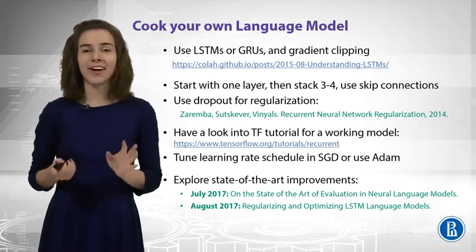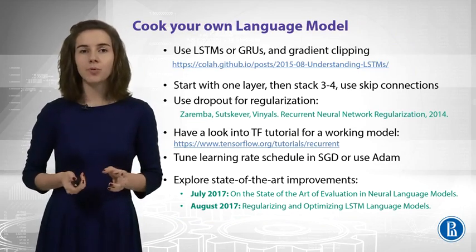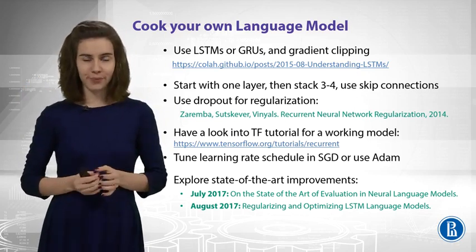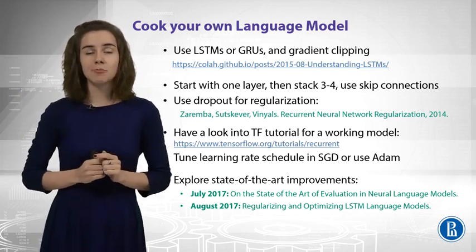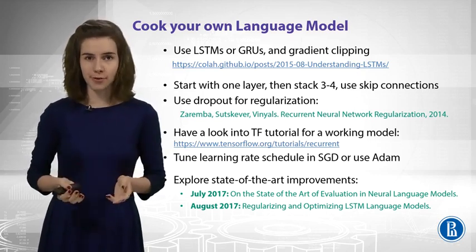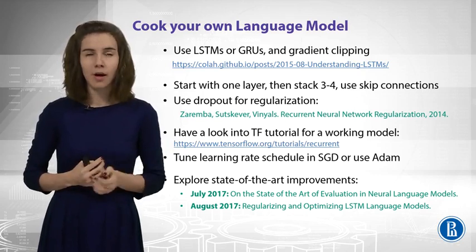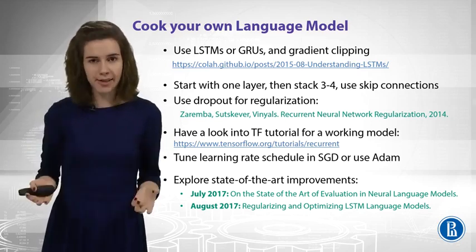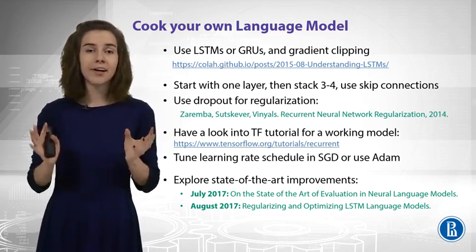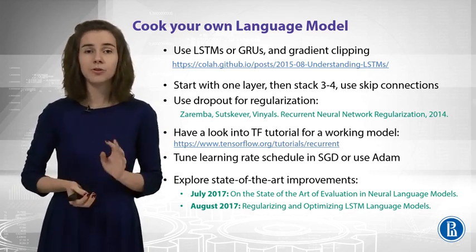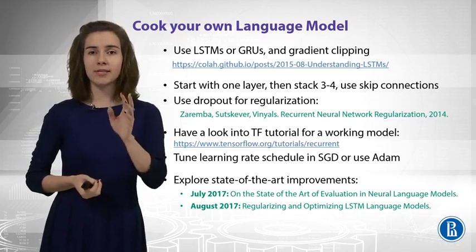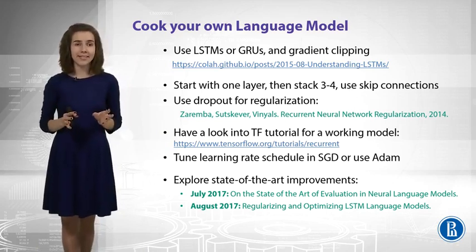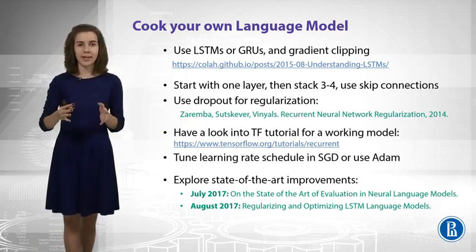This is just a vanilla recurrent neural network. But in practice, maybe you want to do something more — some other tips and tricks to make your language model work. First, you probably want to use long short-term memory networks and use gradient clipping. You might know about the problem of exploding gradients or vanishing gradients, and these architectures can help you deal with these problems. If you do not remember the LSTM model, you can check out this blog post, which is a great explanation of LSTM. You can start with just a one-layer LSTM.